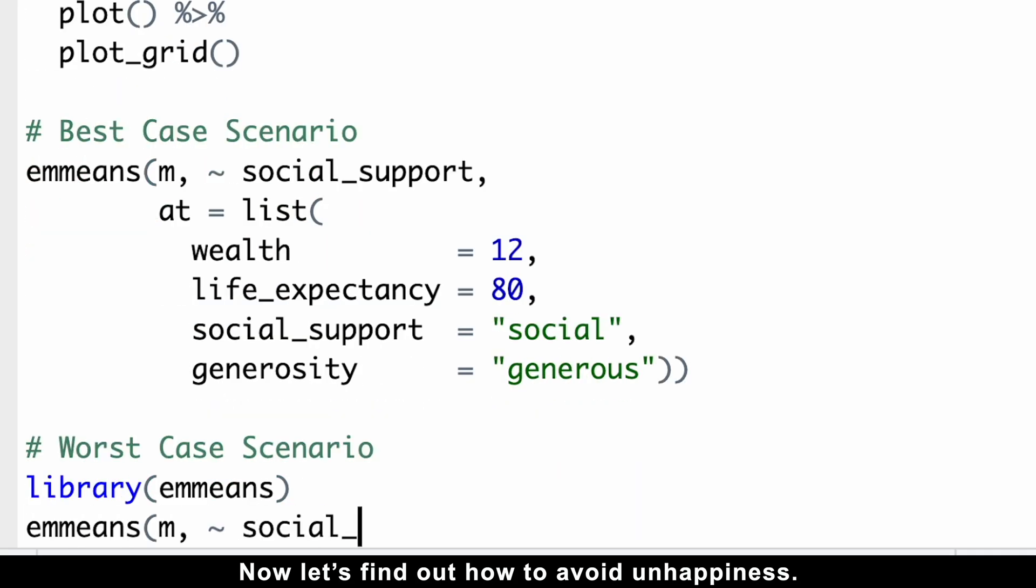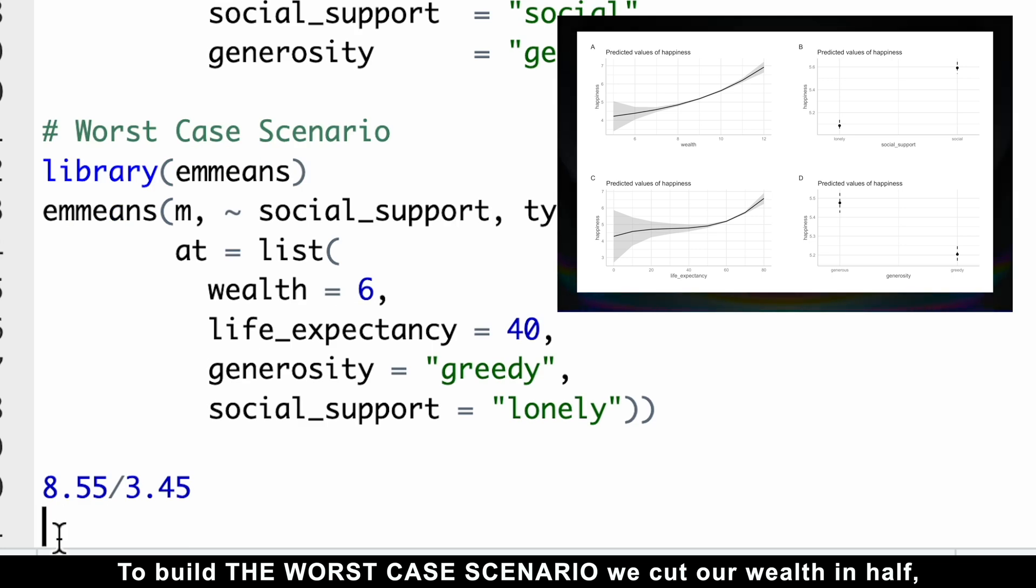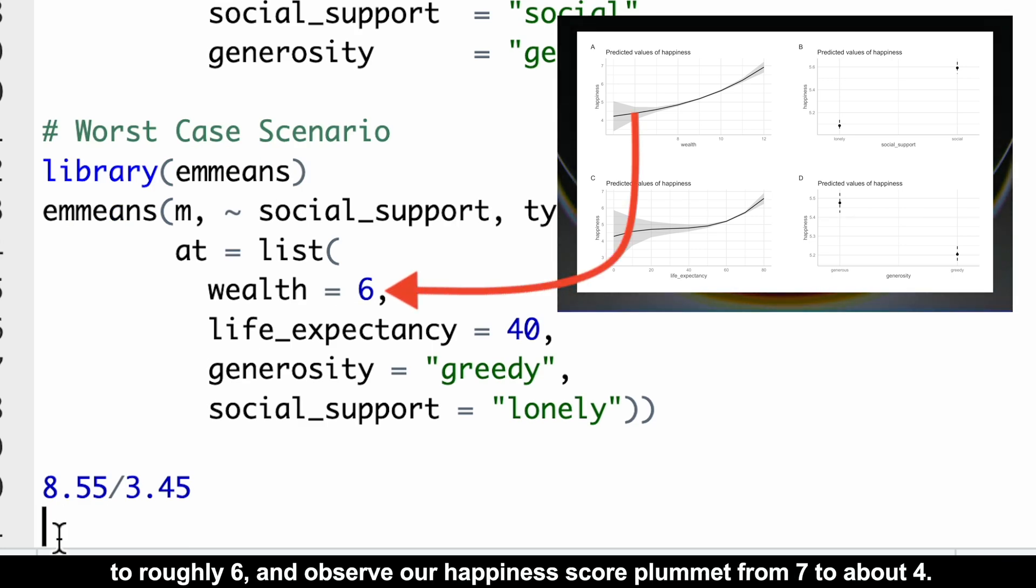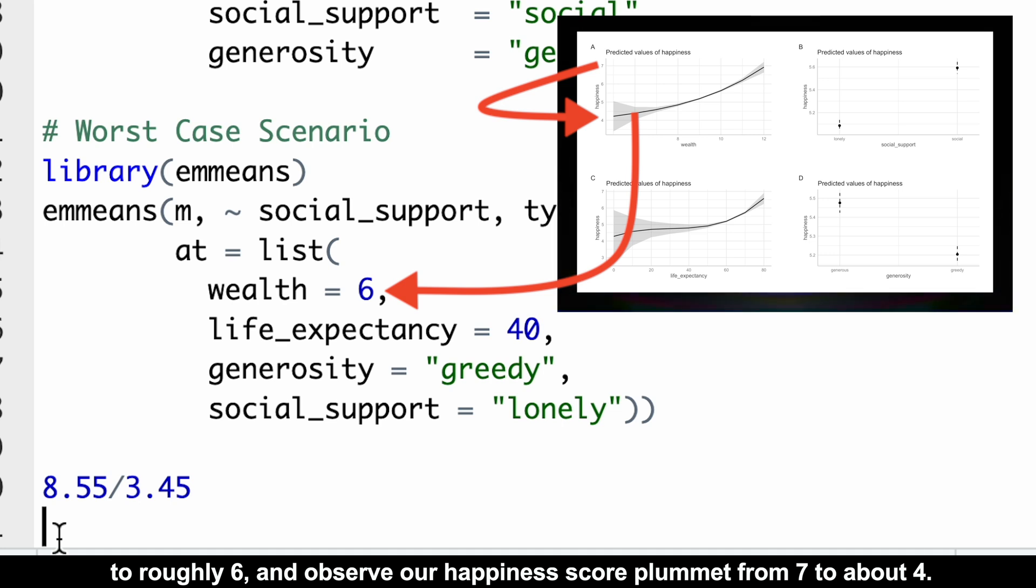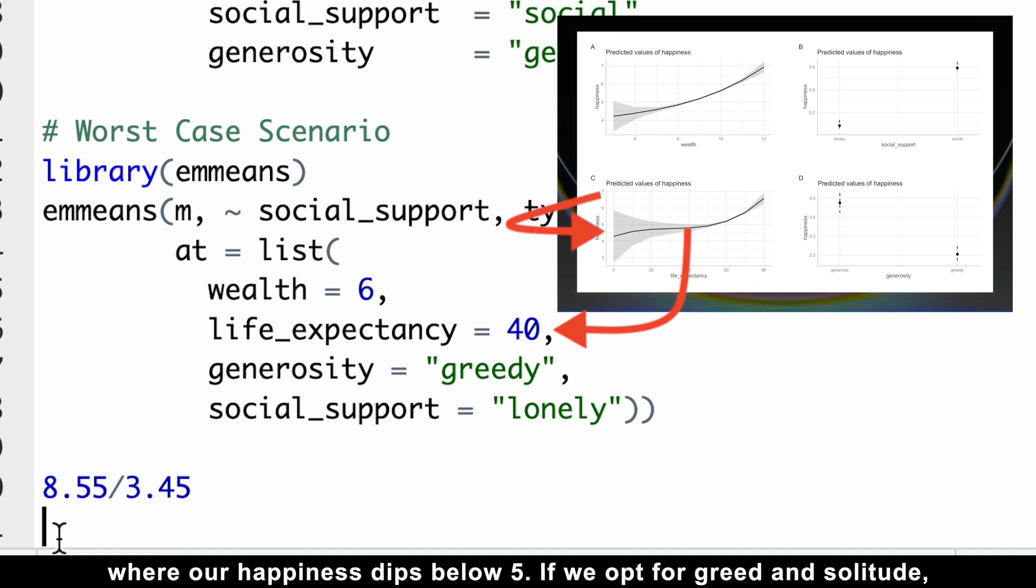Now, let's find out how to avoid unhappiness. To build the worst-case scenario, we cut our wealth in half to roughly 6 and observe our happiness score plummet from 7 to about 4. Next, we reduce our life expectancy to 40 years, where our happiness dips below 5.